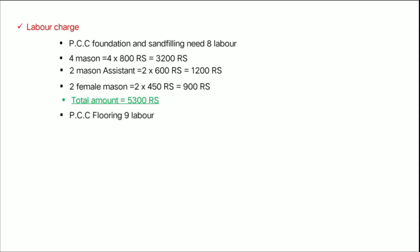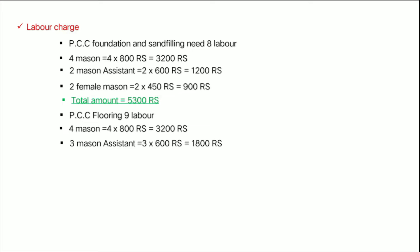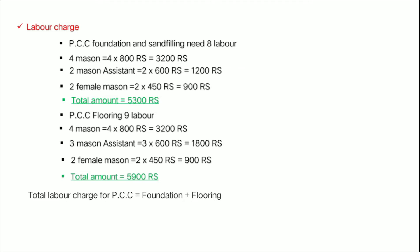PCC for flooring needs 9 laborers: 4,800 rupees, plus 3,100 rupees, plus 3,600 rupees, plus 1,800 rupees. 2 female masons at 450 rupees each — that is 900 rupees. Total labor for PCC flooring: 5,900 rupees, approximately 6,500 rupees. Total labor cost is approximately 500 rupees additional. If you use 534 square feet, you can calculate the labor amount.